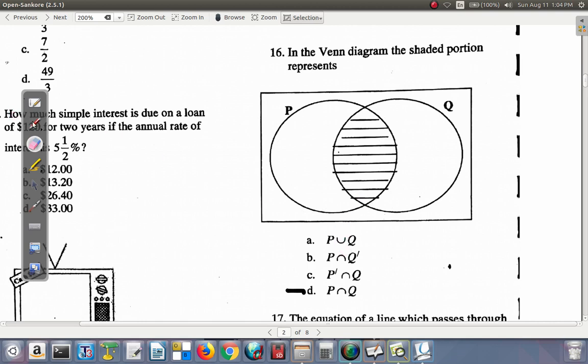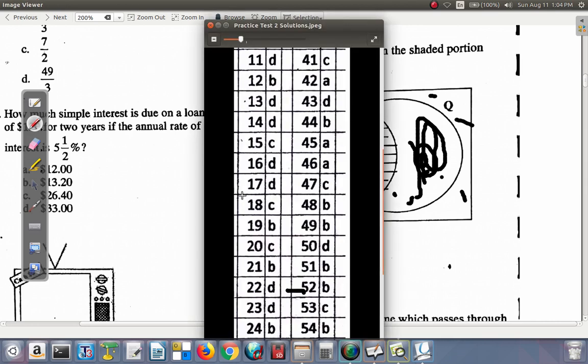P intersect Q complement, what would that be? Q complement would be outside of Q, and P intersect that would be that, so it's not B. If you say P complement intersect Q, P complement means outside of P, and when that intersects Q, it would be in this region. So it's not C. Definitely it's D. So 16 is D.